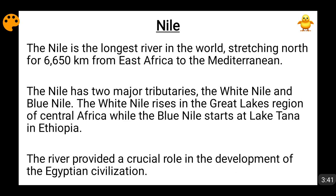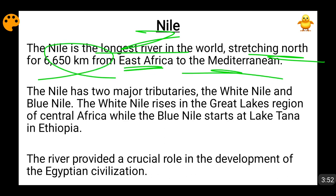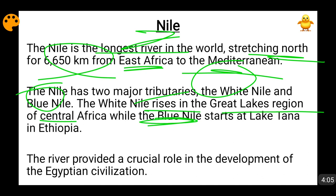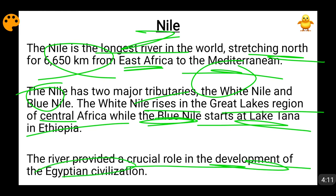Nile is the longest river in the world. It goes northwards from East Africa to the Mediterranean Sea and is 6,650 kilometers long. It has two tributaries: one is White Nile and one is Blue Nile. White Nile originates from the Great Lakes region in Central Africa, whereas Blue Nile originates from Lake Tana in Ethiopia. This river has played a very crucial role in the development of Egyptian civilization.